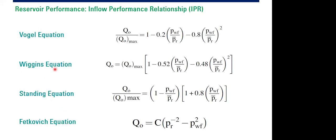Some of these equations can be found in software as well. I've prepared a case with productivity index and a case with Jones equation, which is also a popular equation to describe inflow performance relationship. We name the performance of our reservoir using the term inflow performance relationship, or IPR.